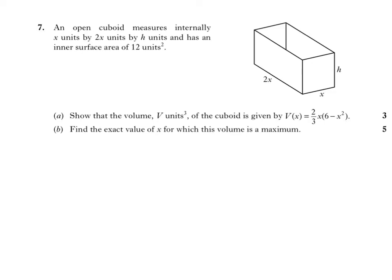Show that the volume of the cuboid is given by V equals 2/3 x(6 - x²). We can see that the volume of the cuboid is just going to be length times breadth times height, so that's 2x²h. Now if we look at the result here, it contains x's but does not contain h. So the first thing we're looking to do is see if we can come up with an expression for h in terms of x.